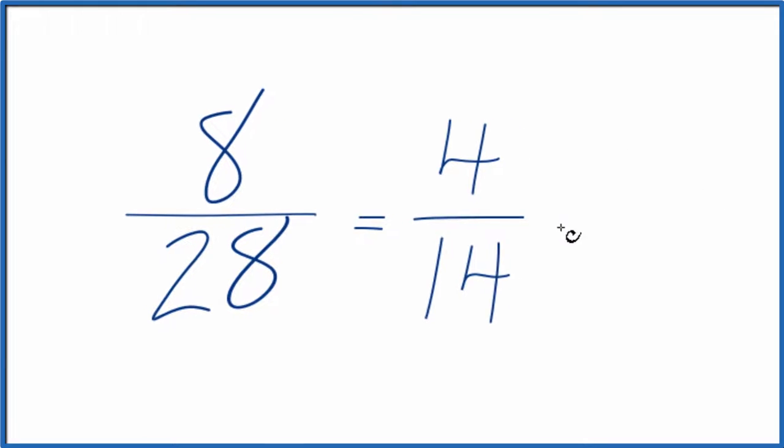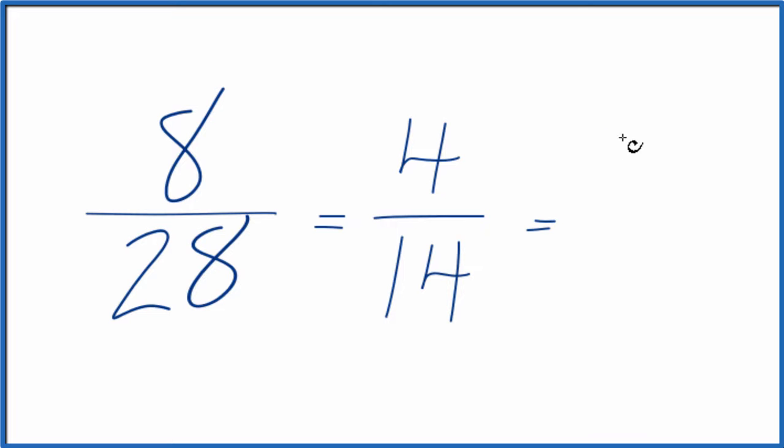And I could do that again. These are even. I could divide 4 by 2 to get 2. And 14, if I divide that by 2, that gives me 7. And I can't simplify this any further.